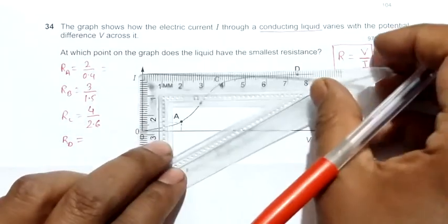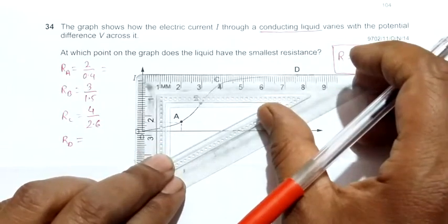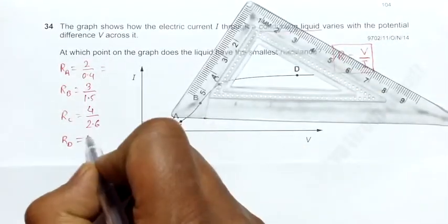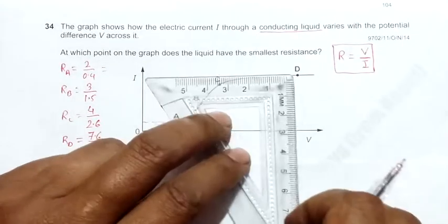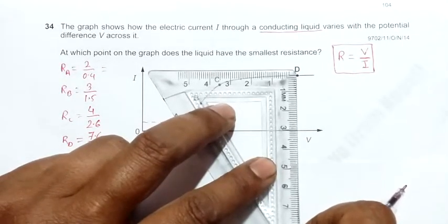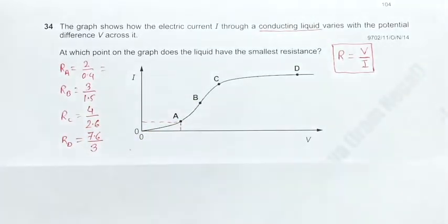For D, R_D equals this measurement, which will be around 7.6 centimeters, divided by around 3 centimeters.